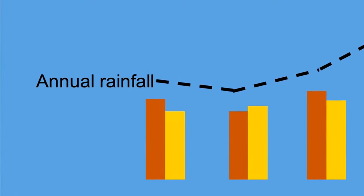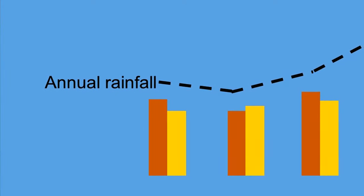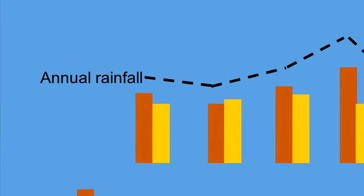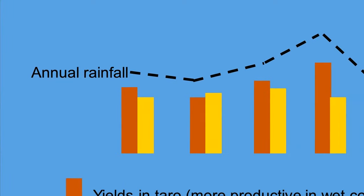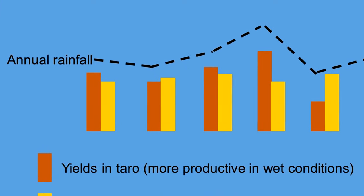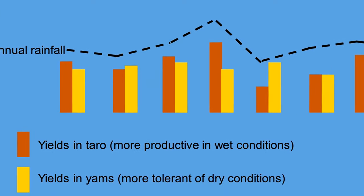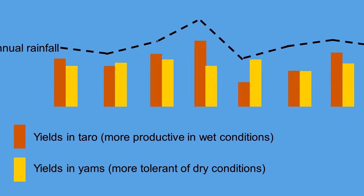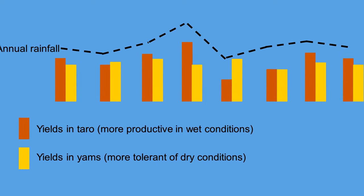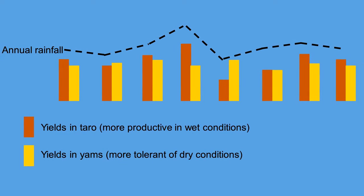We furthermore can coordinate this information with other lines of evidence, such as about past climate and weather events during the time when a site was occupied. In this way, we can build more comprehensive understanding and explanations of the past.